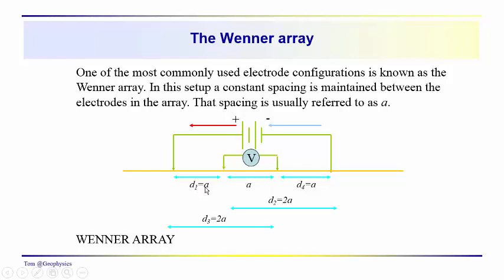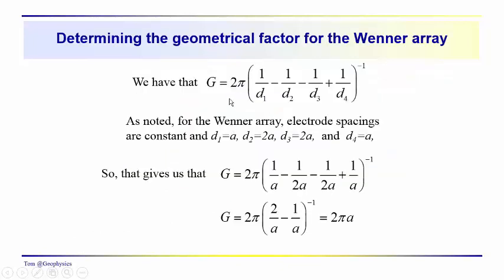That gives us d1 equal to a, d2 — the distance from this potential electrode to the source — equal to 2a, the distance from the other potential electrode to the source equal to 2a, and the distance from this potential electrode to the sink equal to a. So we just substitute these values into the expression for the geometrical factor, remembering that the geometrical factor is defined as two pi times the reciprocal of the sum and differences of these distances.